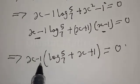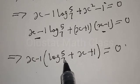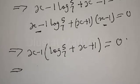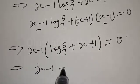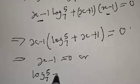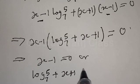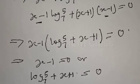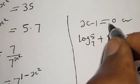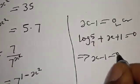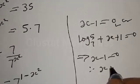Factoring out x minus 1, we have x minus 1 times the quantity log 5 base 7 plus x plus 1, equal to 0. From here, either x minus 1 equals 0, or log 5 base 7 plus x plus 1 equals 0. From x minus 1 equals 0, we get x equals 1.